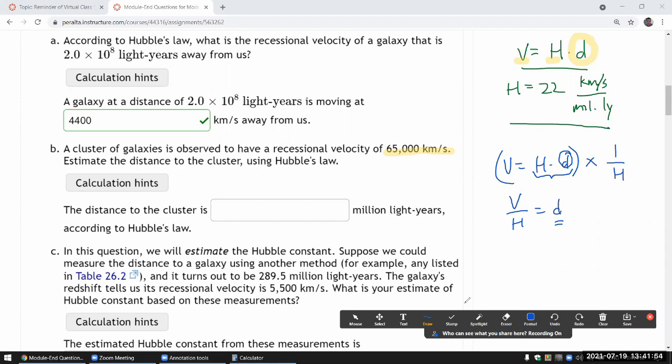Let me just write that out and make sure all the units work out. So distance is recessional velocity, 65,000 kilometers per second, divided by the Hubble constant, which is here, 22 kilometers per second per million light years. Since I was talking about how important the units are, let's just work through the units, make sure we are all squared up. I have kilometers per second on the numerator and the kilometers per second on the denominator. So that means I can cancel them out.